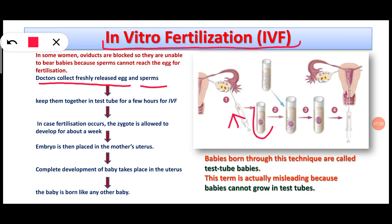The egg is kept in a test tube and the sperms from the father are collected in another test tube. The sperms are then mixed with the egg and allowed to fuse with it in the test tube. So in this test tube, fertilization — the fusion of sperm and egg — takes place. After fertilization, the egg is now called the zygote.